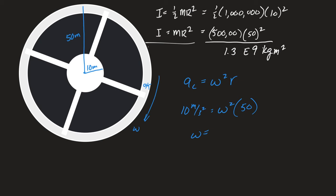If I was asking this on a test, I would probably have three subsequent questions. There's absolutely no reason why you shouldn't be able to do them. Question number one: the space station is to be brought from rest to this speed in 30 seconds — what angular acceleration would be required?